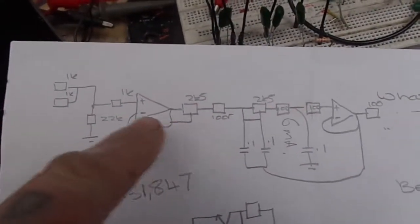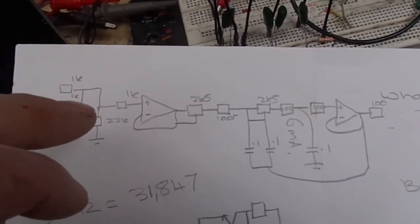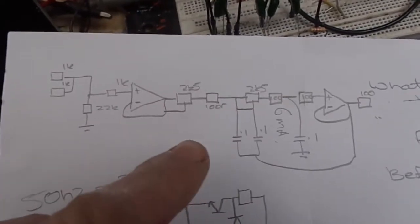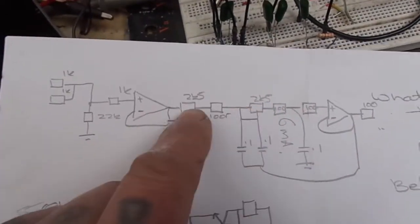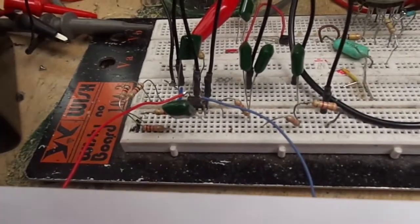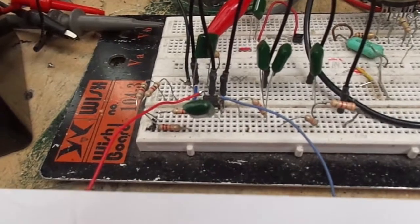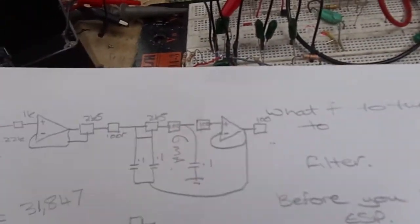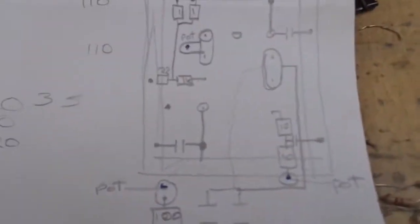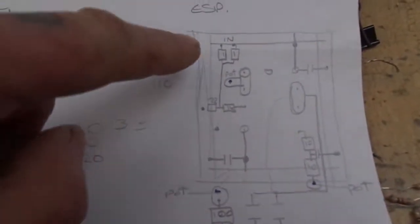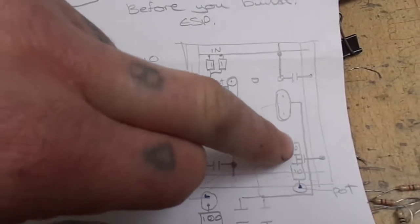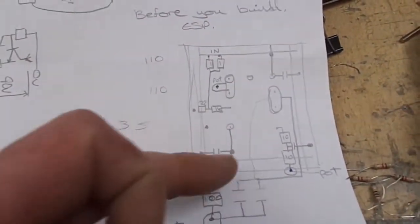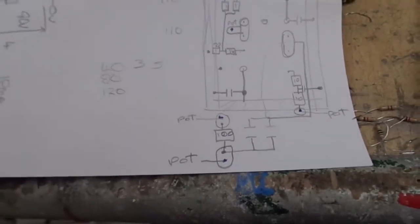It's a circuit from ESP, Elliot Sound Products, variable low pass filter. These values here are wrong, so what I've done is basically built it on a breadboard, checked that it's working okay. It just uses one TL072, and then I've done a rough layout here. These are the pads of the op amp, so just a rough layout. It's a very simple circuit.